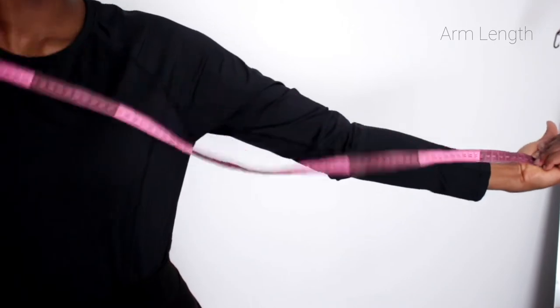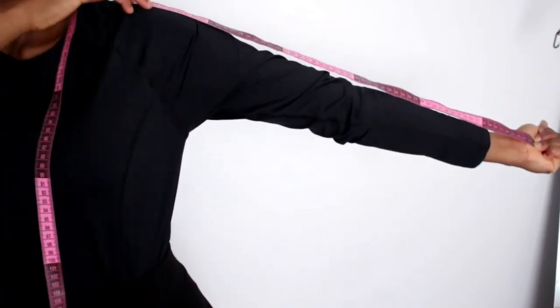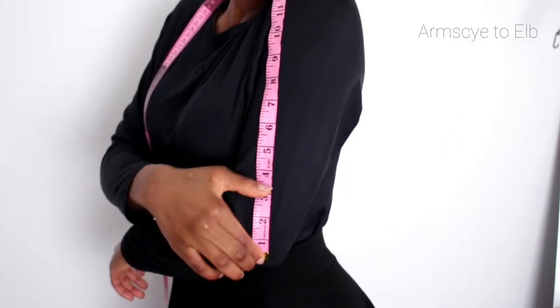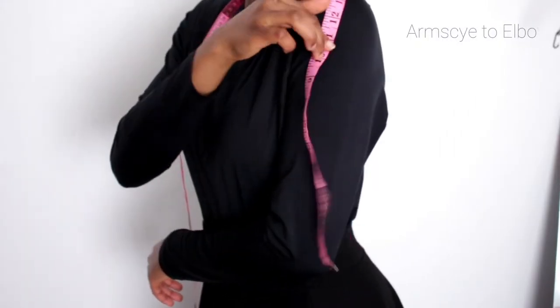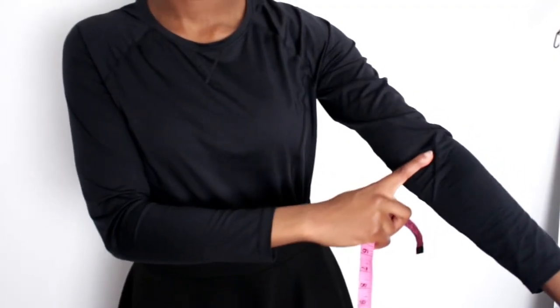You also want your arm length. In the clip I didn't bend my elbow but I advise you to do that. You want that full length. You want to measure your elbow to your arm side, your elbow length. Optionally you can measure your elbow width and your wrist width. They're not important but they're good to note down.